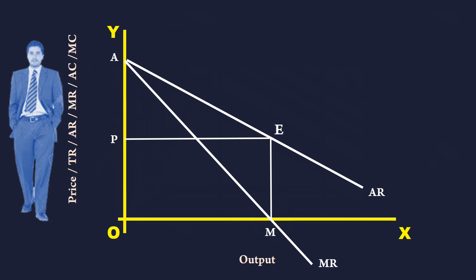Point E. It lies on the average revenue curve, exactly above M, where MR is equal to zero. At this point, elasticity is equal to one.